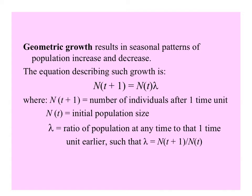Geometric growth comes from seasonal patterns of population increase and decrease. Many animals, especially in temperate or boreal areas, hibernate in the winter and reproduce in the spring. So the equation describing their growth, instead of little r, involves lambda: N(t+1) is equal to N(t) times lambda. Lambda is the ratio of the population at any time to that one time interval earlier.